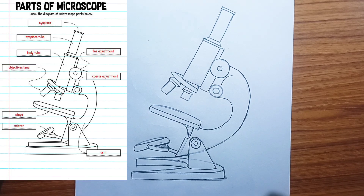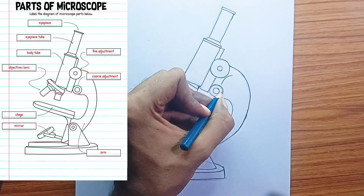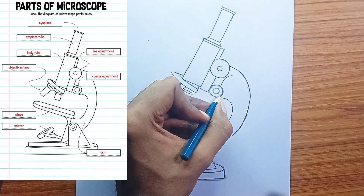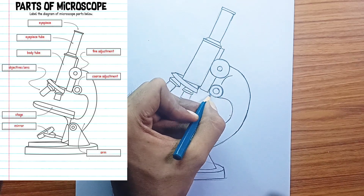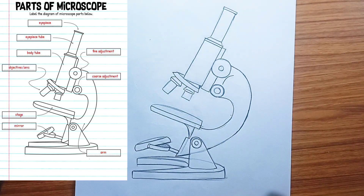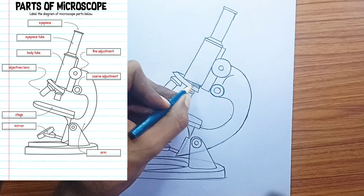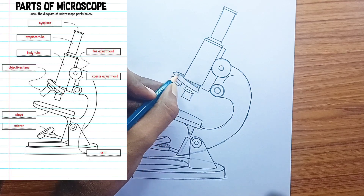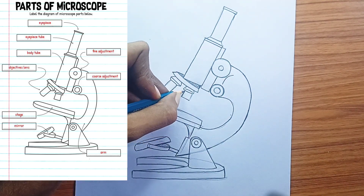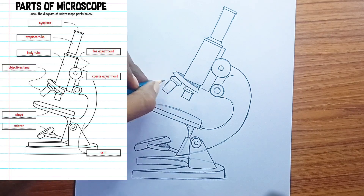Fine adjustment. This is a small, typically inner knob used for making precise, minute adjustments to the focus. It's especially crucial when using high power objective lenses, e.g., 40x or 100x, to achieve a sharp, clear image, as even a slight movement can blur the view.